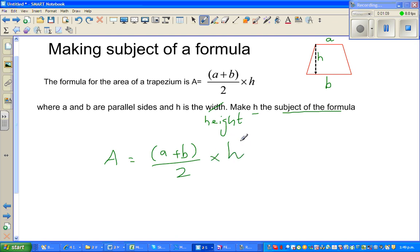And I want to isolate h. So to isolate h, what can I do? I want to take this (a plus b) over 2 to the other side. I want to get rid of this 2 from this side, one at a time.